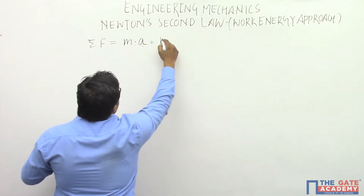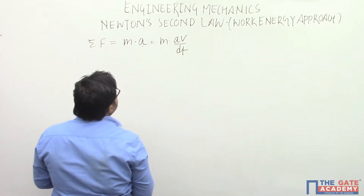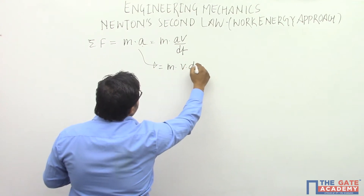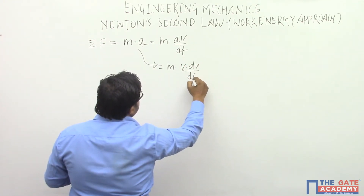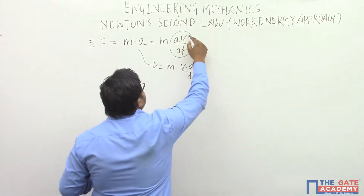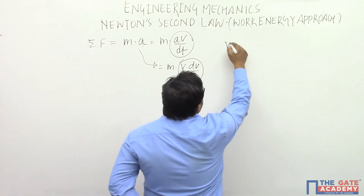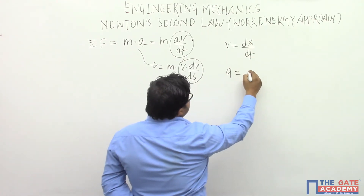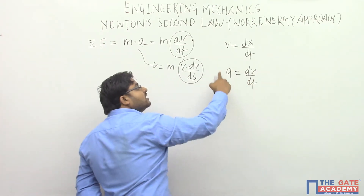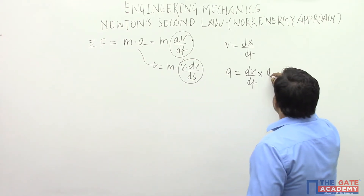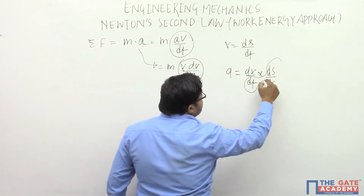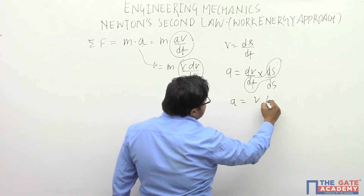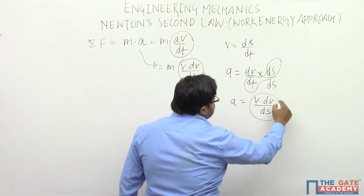Acceleration can be written as dv over dt. At the same time, acceleration can also be written as v·dv over ds. Velocity is defined as ds/dt — the time rate of change of displacement — and acceleration is the time rate of change of velocity. Multiplying by ds/ds, the ds/dt term becomes v, so a = v·dv/ds. This is the expression we are going to use.